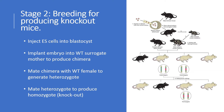Chimeric mice are then mated with mice homozygous for another allele of the marker trait to determine if the knockout mutation is incorporated into the germ line. Finally, mating of mice each heterozygous for the knockout allele will produce progeny homozygous for the knockout mutation.